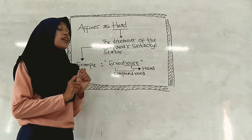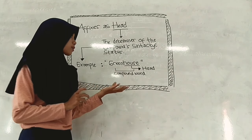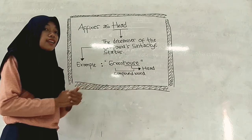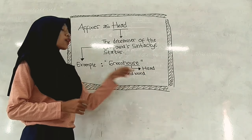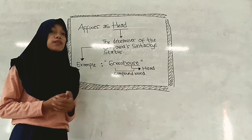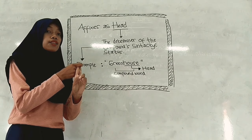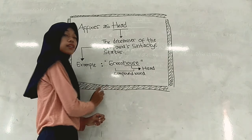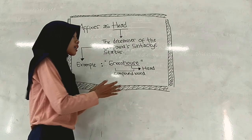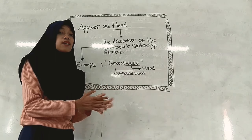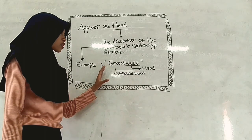I have read a word that contains the affix head. The word is 'greenhouse.' Here, 'house' functions as the head of the affix. As you know, compound words are two words that become one word with a different meaning. Like here, 'greenhouse' doesn't mean that the house color is green, but it has its own meaning, which is the house of agriculture. And this is what we call a compound word.